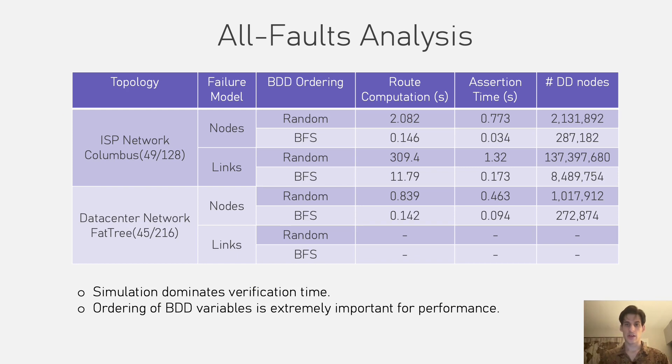We evaluated our tool on ISP and data center networks. These two have slightly different properties. ISP networks tend to have less symmetries and less redundancy, but richer policy. While data center networks are generally larger, but have very symmetric design. The table shows one ISP and one data center network evaluated against two different failure models. One where all the nodes can fail and one where all links can fail. In both cases, the route computation is what dominates the verification time. Computing probabilities and checking assertions is very fast.